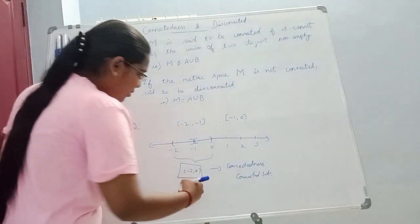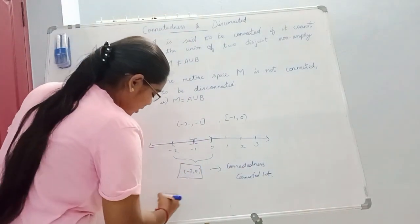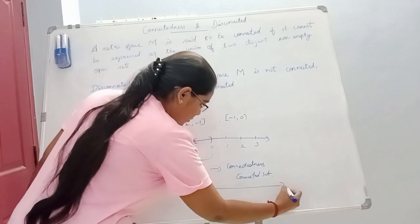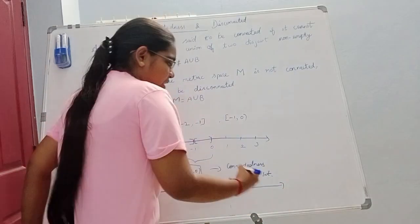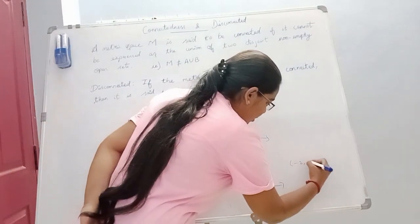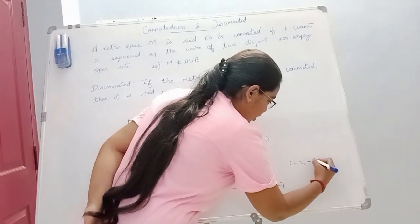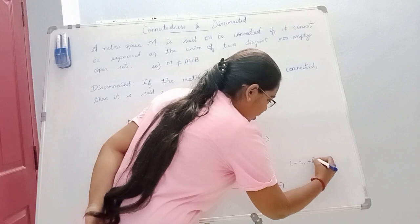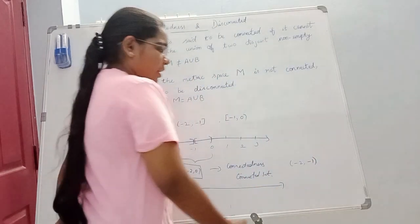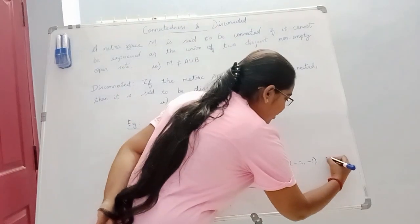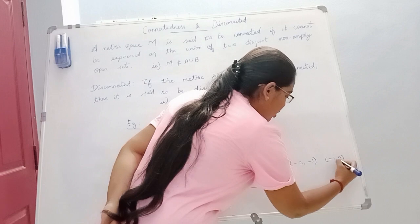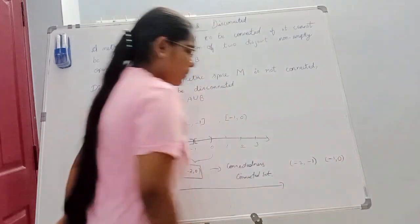Let's take another example: minus 2 comma minus 1 as an open interval, and minus 1 comma 0 as another open interval.